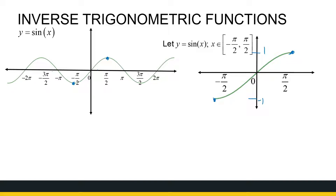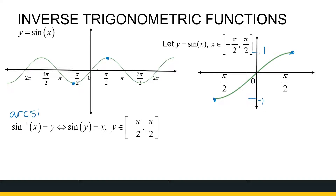So I'm defining my inverse function: sine inverse. Now the notation — that's not an exponent of minus one, that is the notation for inverse. Another notation is arc sine of x. So if you do not like what looks like an exponent minus one, you could call it arc sine, and I will use them interchangeably. So the inverse of sine of x is y if and only if sine of y is equal to x, because that's how we define the inverse function. So in my inverse function, we now will have the y values between minus pi over two and pi over two. So let's see what that inverse function is going to look like.